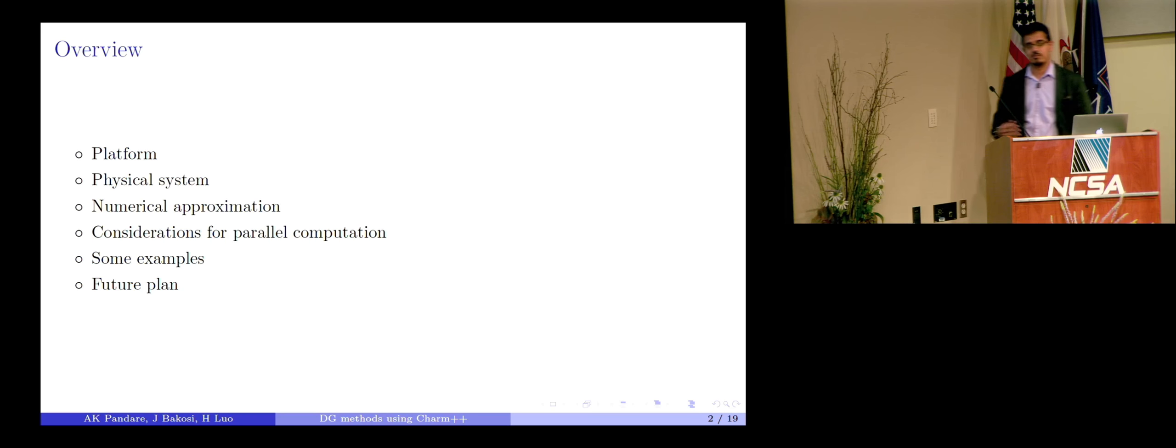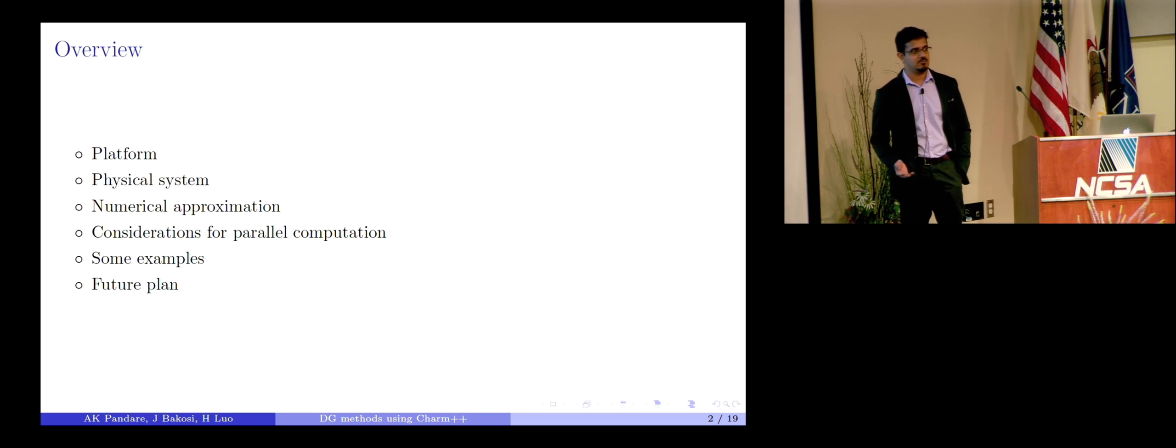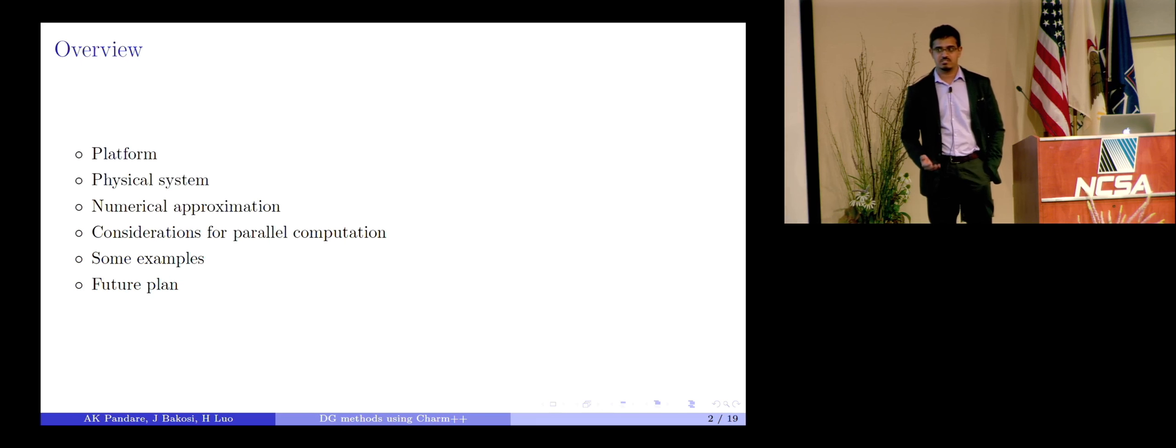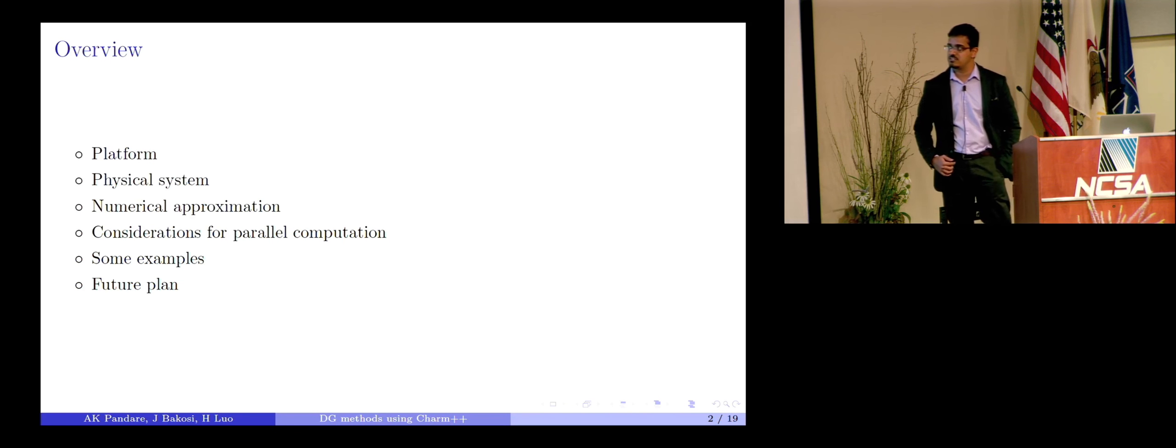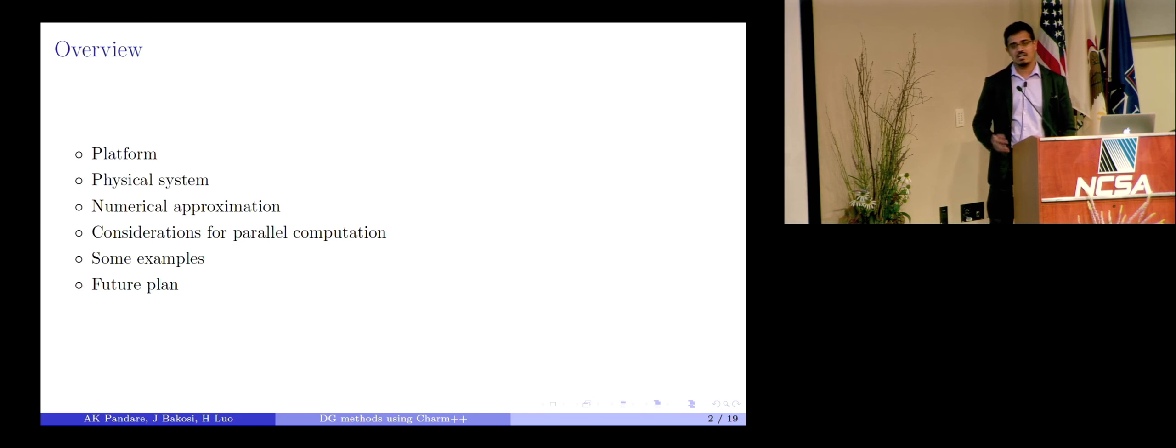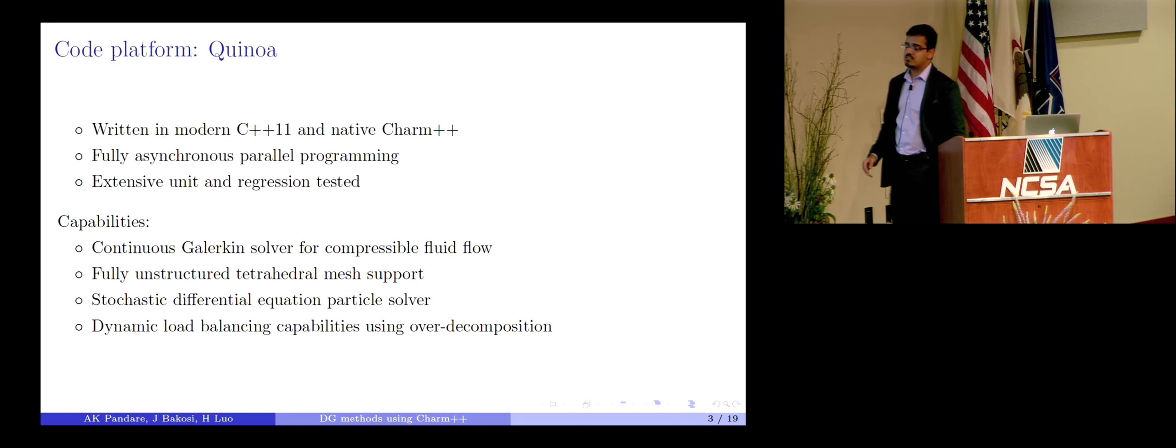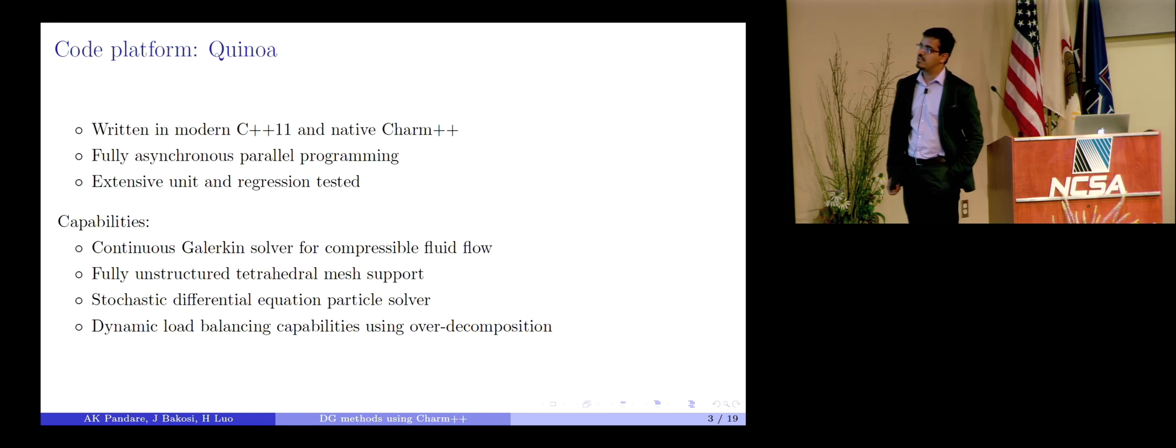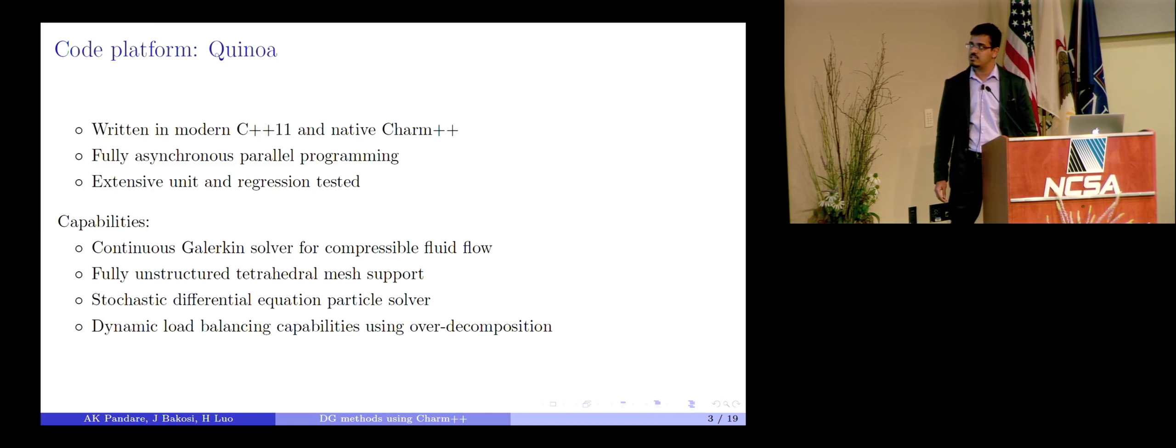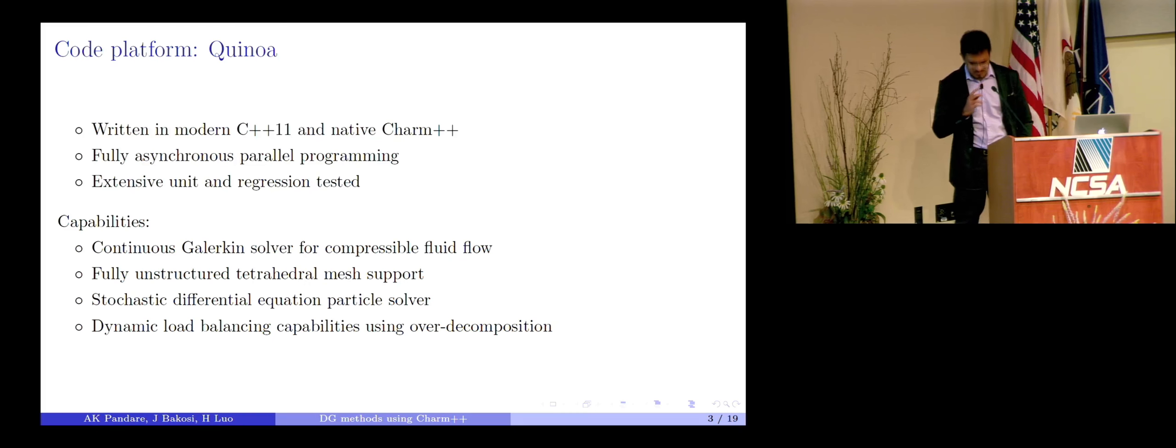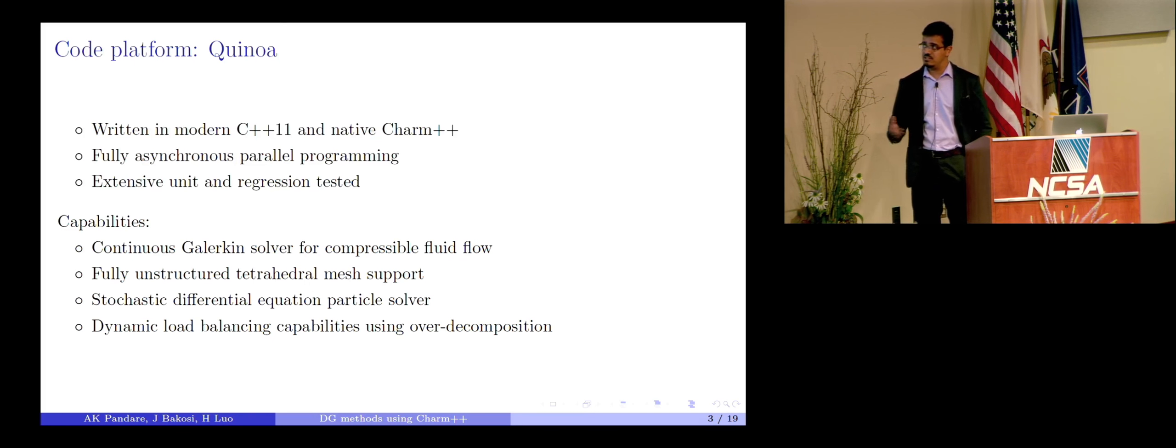So the way I'm going to proceed in this presentation is first I'm going to talk about the platform which Joseph talked about yesterday, the Quinoa code. After that I'll follow it by the physical system that we are trying to solve, then the numerical approximations needed to solve the physical system. Then we'll go a little bit into the details of the considerations for parallel computation for DG methods. I'll wrap it up with some examples after that. So the code that we are working on is written in modern C++ and in native charm++. It is fully asynchronous parallel programming, extensive unit and regression tested. So basically it's a production style code. It takes time to implement such things cleanly in this kind of code.